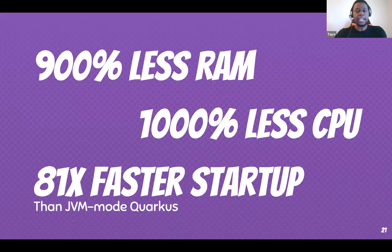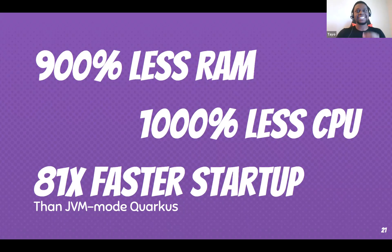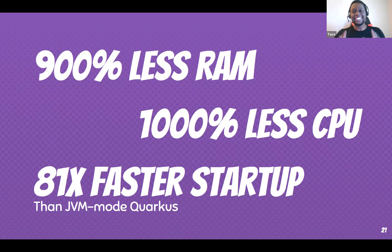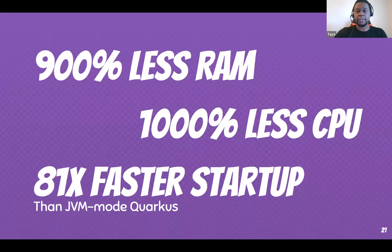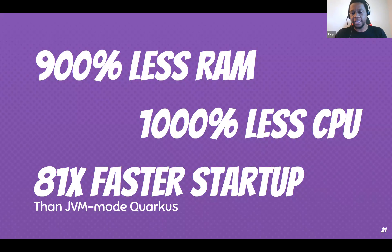Take a hyper-optimized traditional Quarkus application and compile it to native code and you're talking about huge savings. Anyone who's worked in serverless knows about cold starts and how AWS bills per CPU utilization and RAM consumption. Quarkus is going to be the lowest cost provider for applications in a serverless platform — aside from something like Go, not even Python comes close. Cold starts will never be a problem running Quarkus in AWS Lambda.